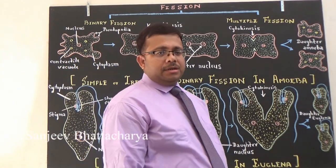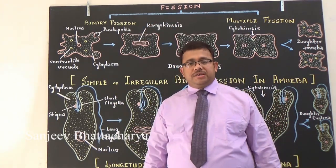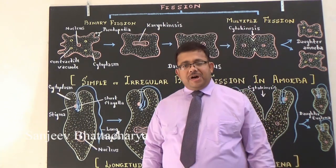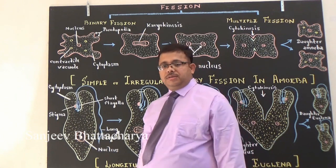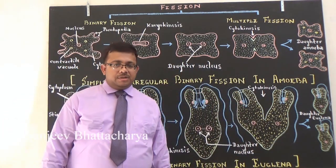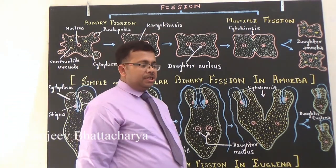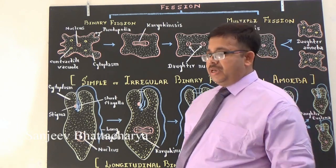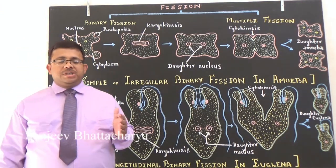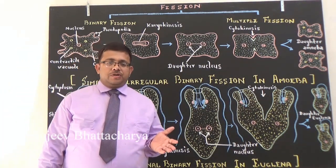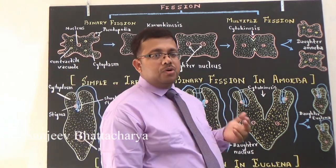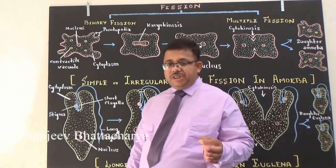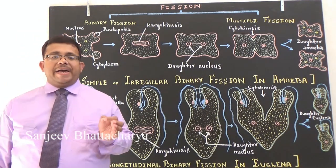Our first type is fission. Fission is a type of asexual reproduction in which a parent cell divides to form two or more daughter cells. Fission is mainly of two types: binary fission and multiple fission. In binary fission, the parent cell equally divides to form two daughter cells or two offspring.